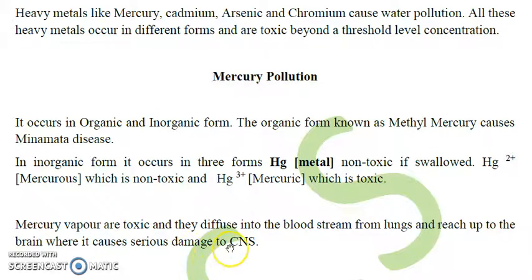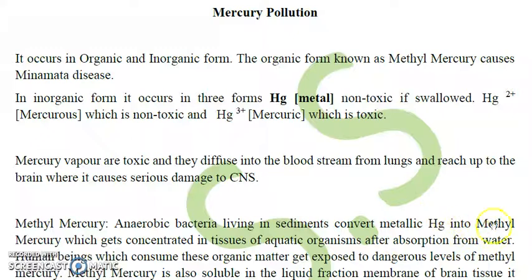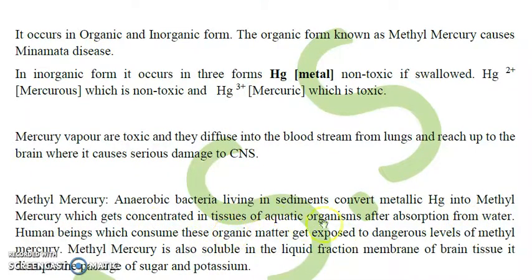Anaerobic bacteria living in sediments convert metallic mercury, which is insoluble in nature, into methylmercury, which is soluble in nature. This methylmercury concentrates in the tissue of aquatic organisms after absorption from the water. People who eat these organisms are then exposed dangerously to high levels of the toxic chemical.